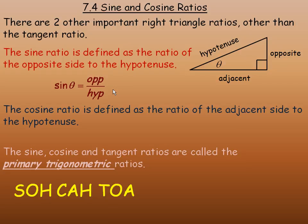The cosine ratio is defined as the ratio of the adjacent side to the hypotenuse. And so we write cos theta is equal to adjacent divided by hypotenuse.